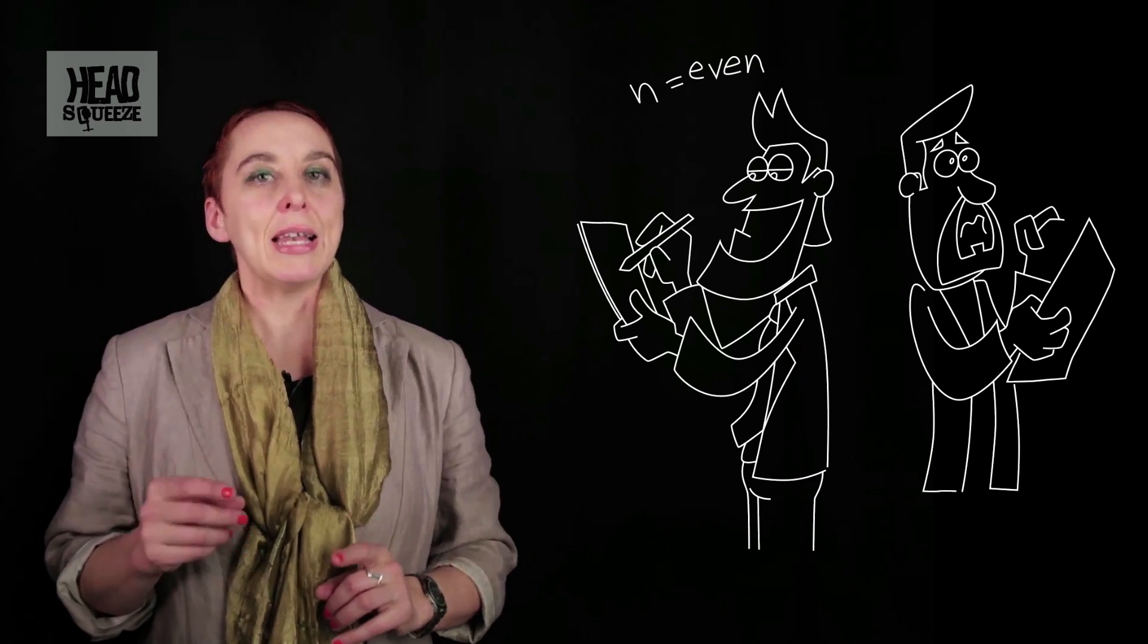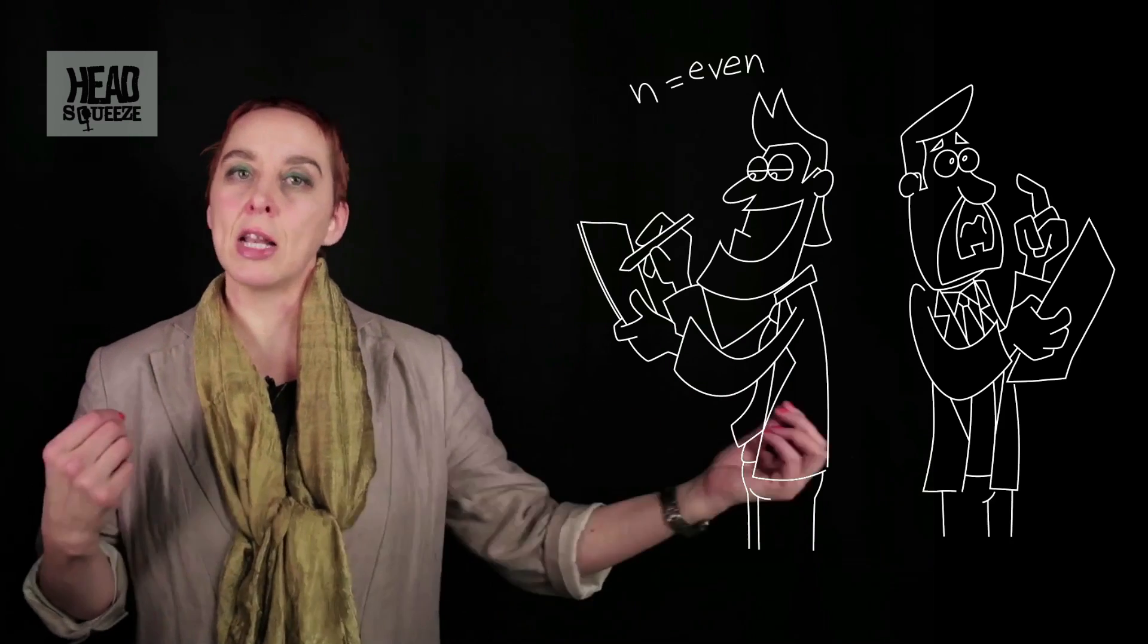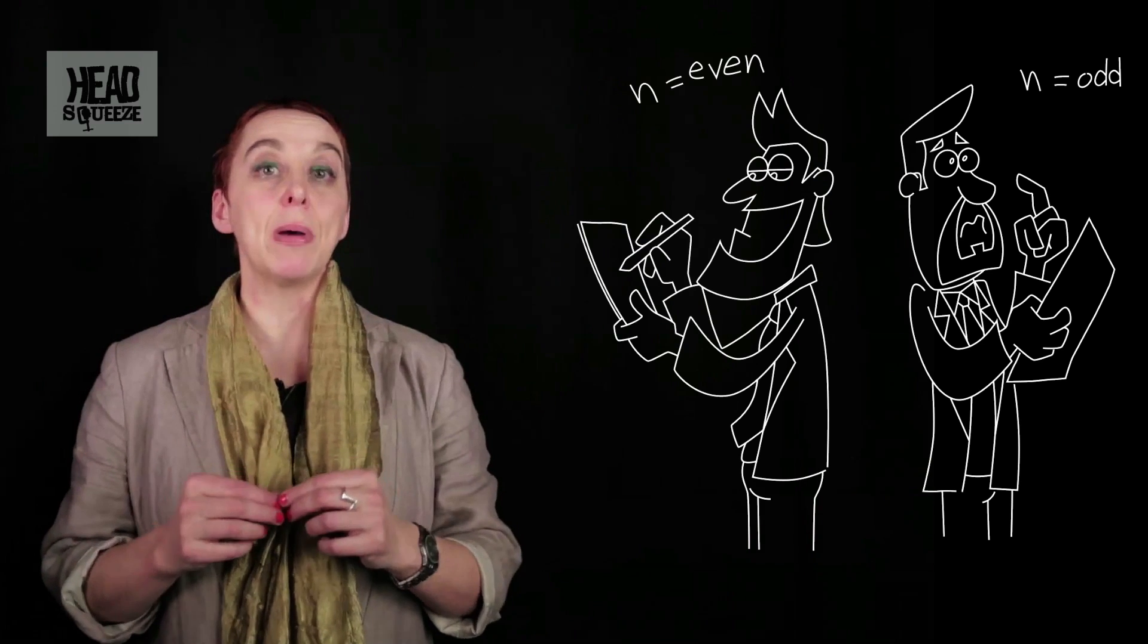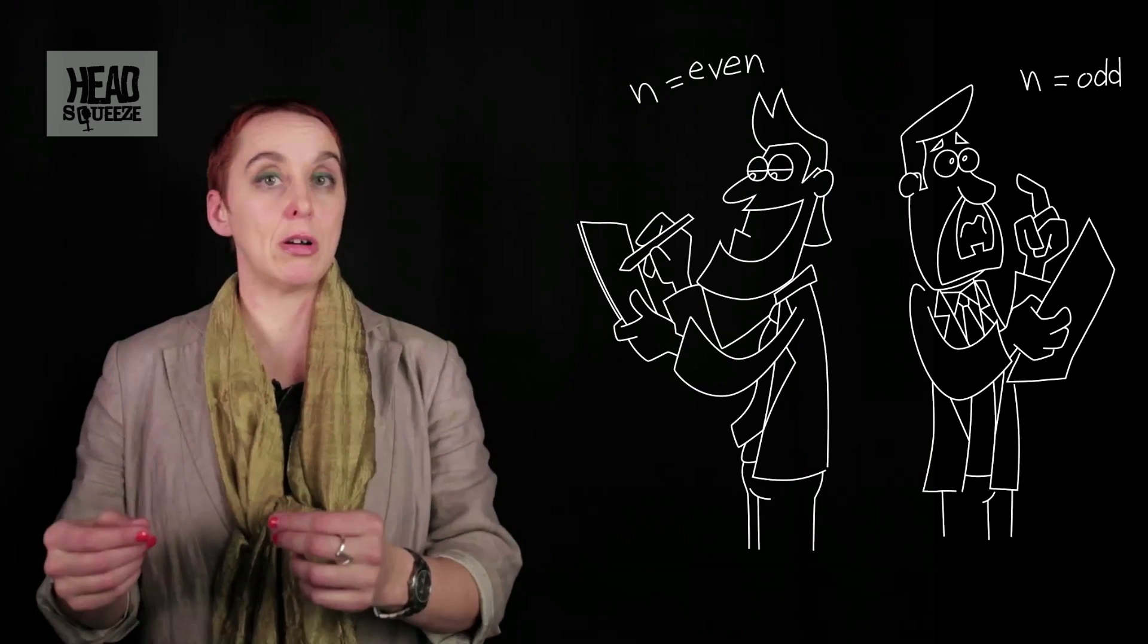But that only works if N is an even number. What if N is an odd number? Well then things get more complicated. And then it does depend where you choose to start. If you're the first person in and you choose to start in an even number position, say the second one along, then other people can come in and fill up all the other even number positions.